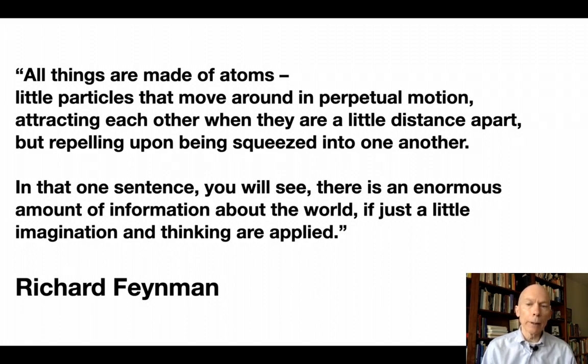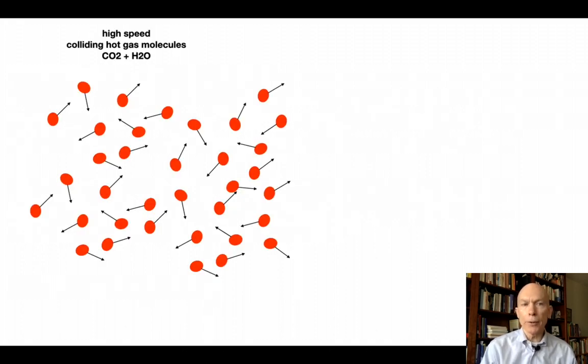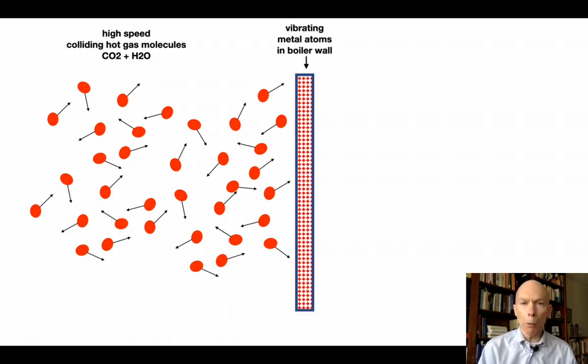So, let's take that way of viewing things into the boiler. Well, the hot gas molecules coming out of the furnace are moving at extremely high speeds, close to 1,000 meters per second. That's about 10 football fields in one second. They're colliding with everything that they see, each other, but more importantly, they're colliding with the metal wall, the atoms in the metal wall. Now, those atoms can't fly around like they do in the gas, but they can vibrate, and they can vibrate very fast.